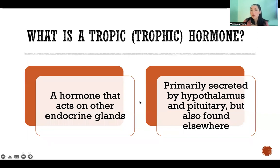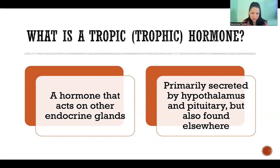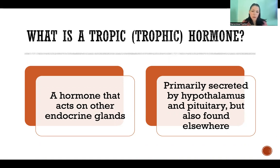So first off, what is it? It's a hormone that acts on other endocrine glands. So we have many hormones in the body that are produced in one place, by one endocrine gland or by one organ,